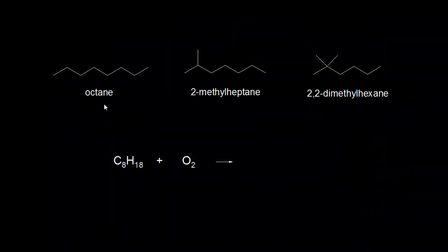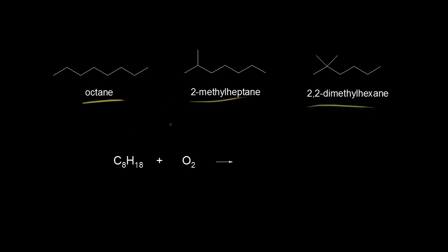Heats of combustion are really useful when you're trying to compare the stability of isomers. For example, here we have three isomers: octane, 2-methylheptane, and 2,2-dimethylhexane. All of these molecules have the molecular formula C8H18.